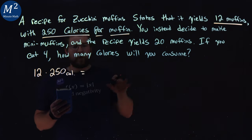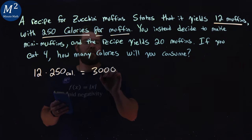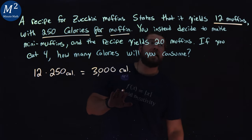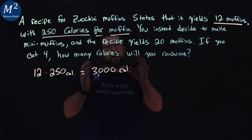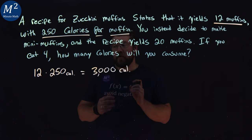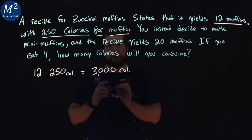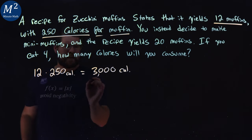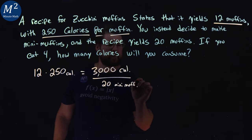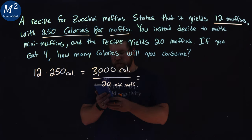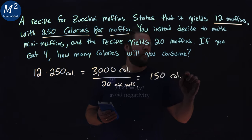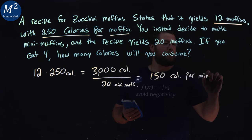So if you eat the whole thing, we have 3000 calories in our whole recipe. Now they tell us we decide to use the same recipe — same amount of 3000 calories — but we make 20 mini muffins. So let's find out the calories per mini muffin. We take that 3000 and divide it by 20 mini muffins. 3000 divided by 20 gives us 150 calories per mini muffin.